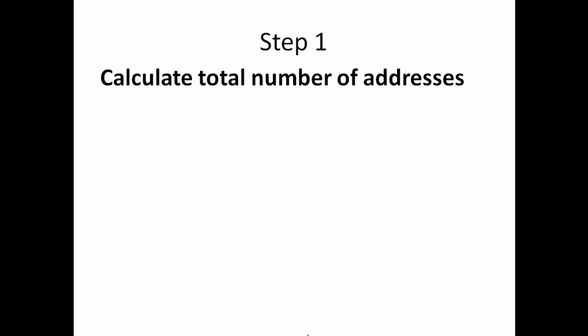We're breaking this down to three simple steps. Our first step is going to be to calculate the total number of addresses. How do we do that? We can take T being our total number of addresses, and we can say T will be 2 raised to the power of 32 minus our net mask.